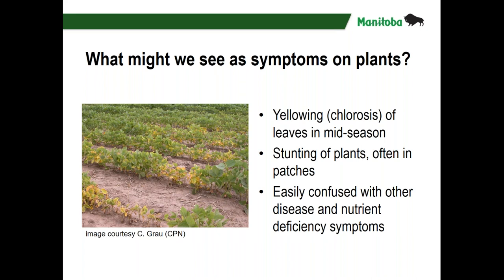If nematodes built to a very plentiful level in soil and a susceptible crop was planted, what might we see above ground? The first thing is some form of yellowing, also known as chlorosis, on leaves in mid-season. Plants will also be stunted, often in patches. Those symptoms could point to a handful of other pathogenic diseases, nutrient deficiencies, or soil conditions like iron-induced chlorosis that look very similar. Thankfully we haven't been drawn to finding the nematode by these symptoms — it appears to be out there at a very low level.